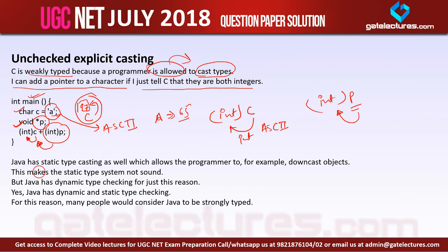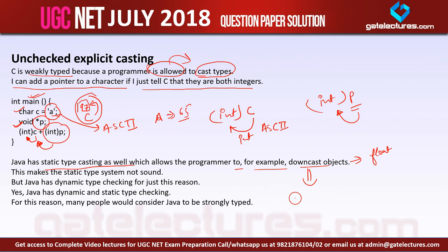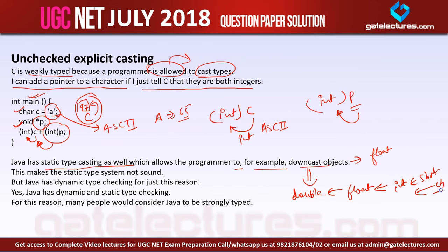When I say Java, Java has static type casting which allows the programmer to downcast objects. For example, if I have a floating point variable, in Java you can directly store the value of a floating point variable in a double variable. In a floating point variable you can store the value of an integer variable. In an integer you can store the value of a short integer, and in a short integer you can store the value of a character.